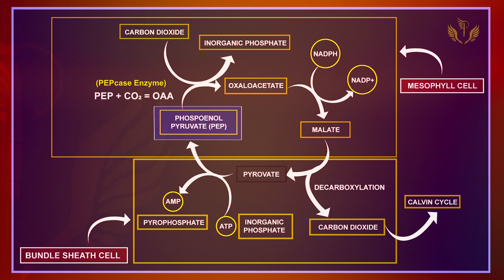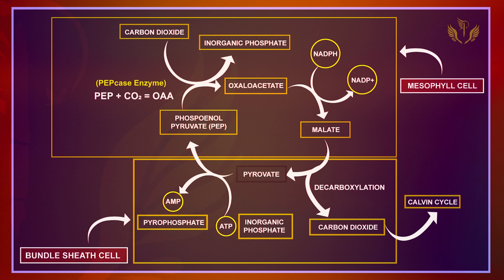During the movement of PEP from bundle sheath cells to mesophyll cells, 2 ATPs are released. So to summarize the C4 cycle: in mesophyll cells, PEPCase catalyzes OAA formation; OAA becomes Malate (4C); Malate enters bundle sheath cells; decarboxylation releases CO2 into the C3 pathway; PEP returns to mesophyll cells with 2 ATP released.